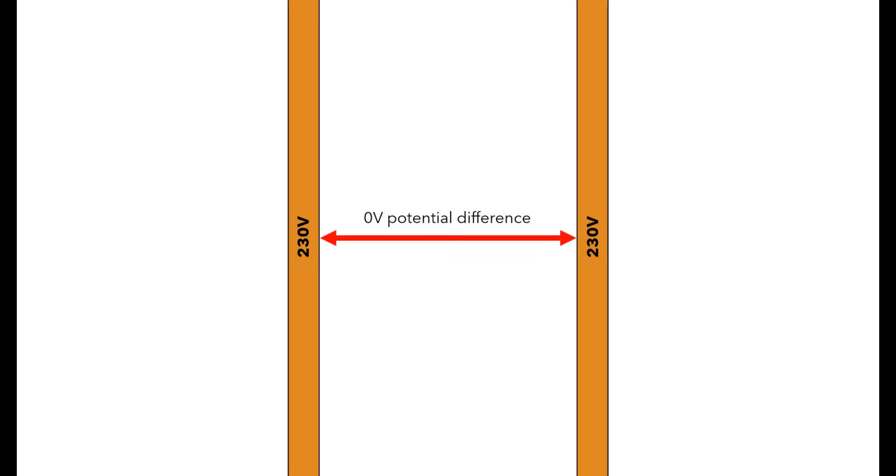If we had 230 volts in one pipe and 230 volts in the other, the potential difference between the two would once again be zero volts. 230 volts minus 230 volts equals zero volts. This means that current cannot flow because it's the potential difference, the voltage, that moves the electrons, the current, around the circuit, and since there is no voltage, there is nothing to move those electrons around.